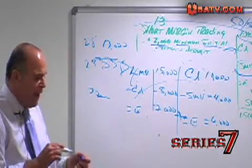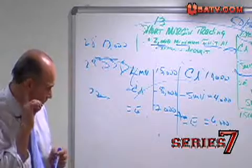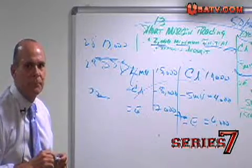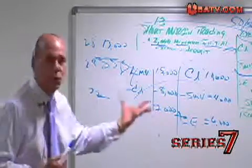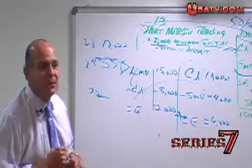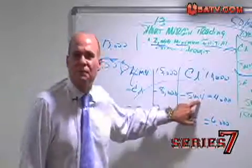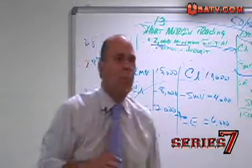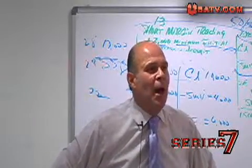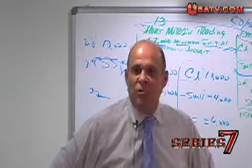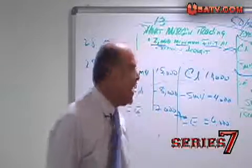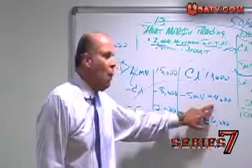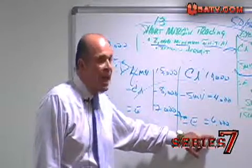For the short side account: credit balance $10,000, short market value $4,000, equity $6,000. Required equity: 50% of SMV = $2,000. Actual equity is $6,000. Excess equity is $4,000, credited to SMA. Short selling power: $4,000 times 2 = $8,000. Watch your math — cut the market value in half first to determine required equity relative to what you actually have.